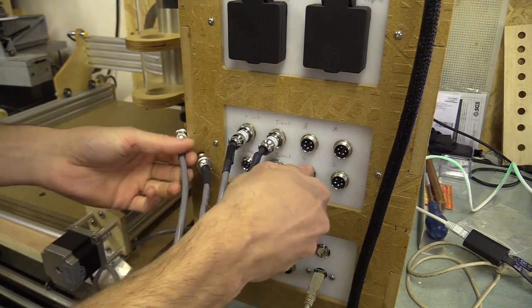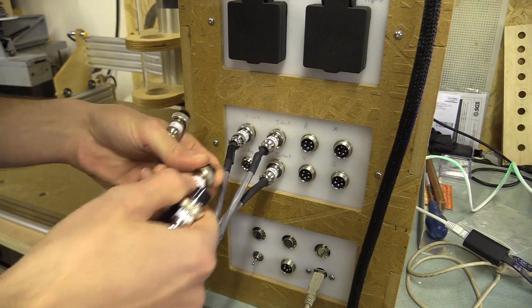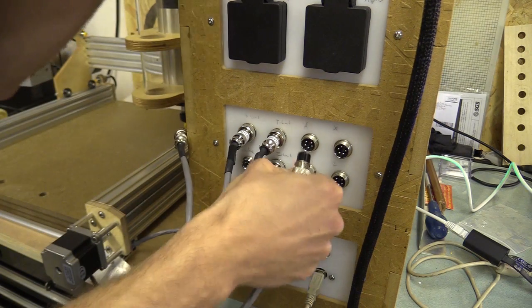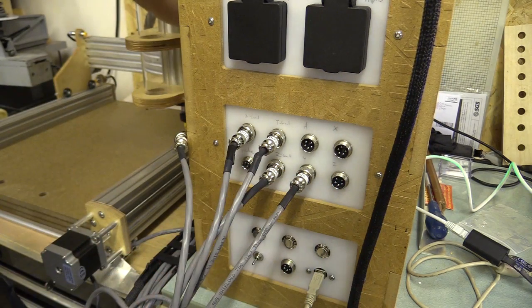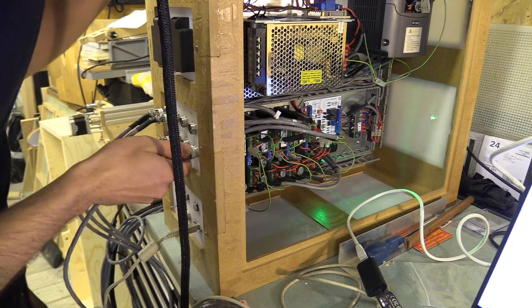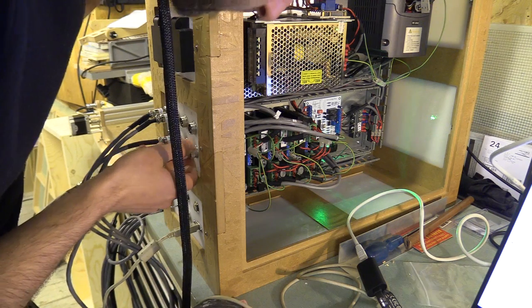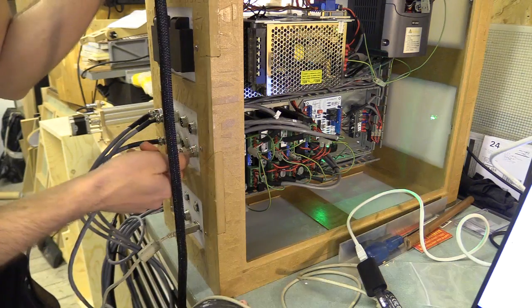I began testing all the wiring first by swapping all the cables outside the case with the one socket I knew worked, and then I checked the wiring inside the enclosure between the aviation panel mounts and the one driver I knew worked. All the wiring seemed OK. I then noticed something else.